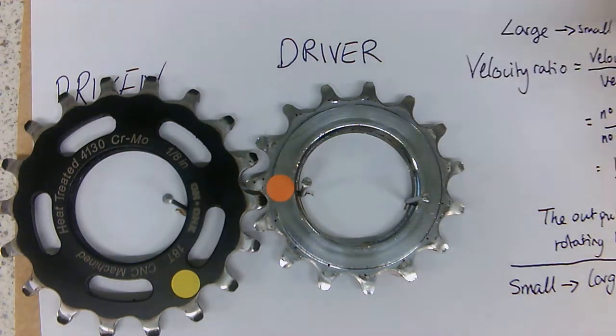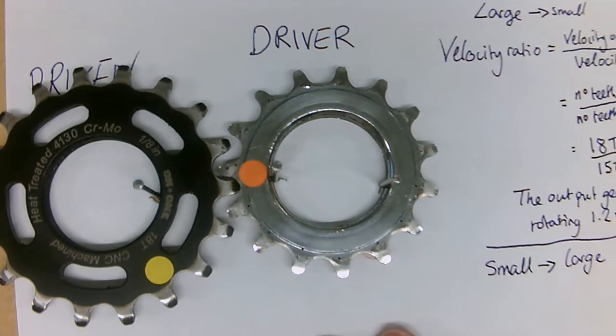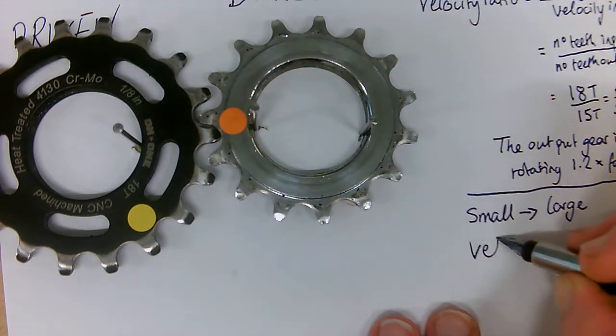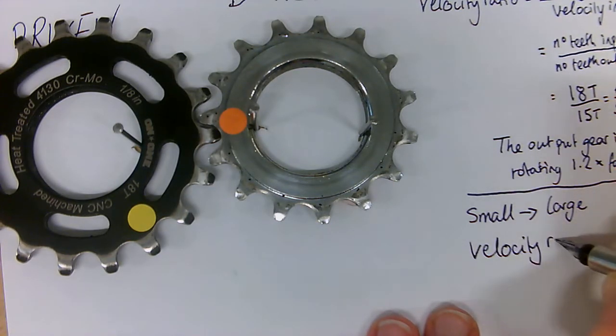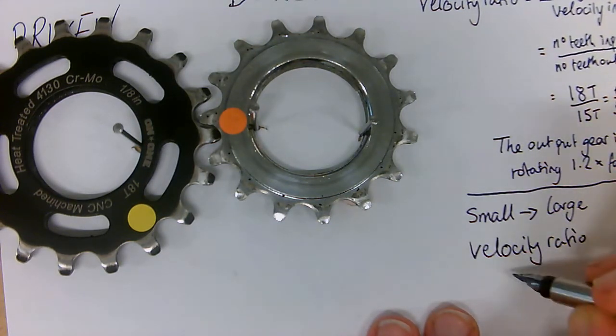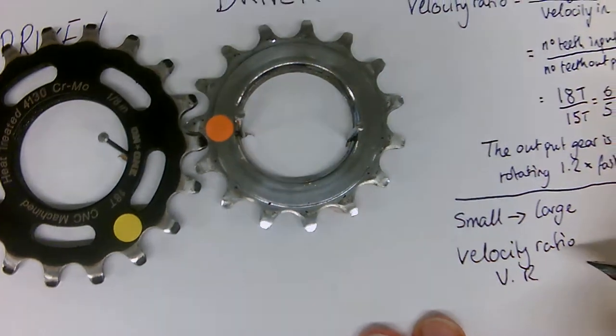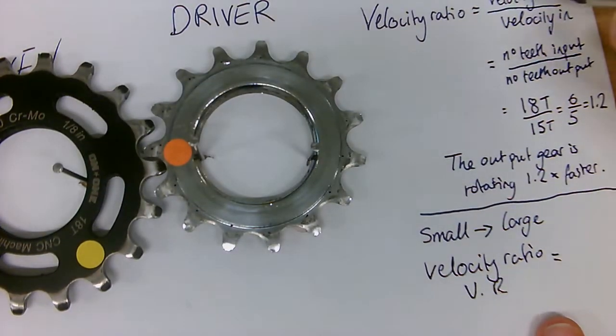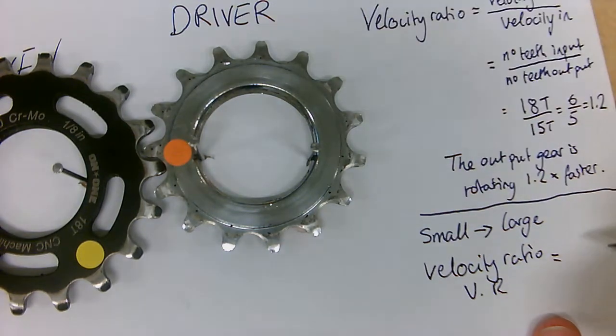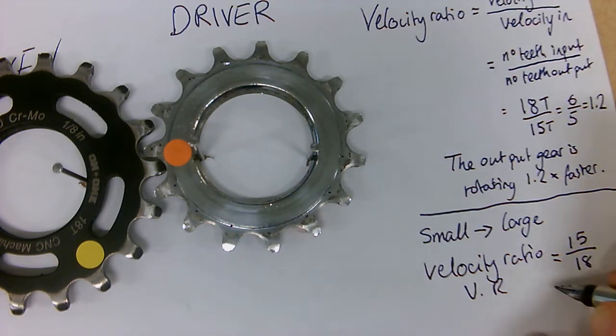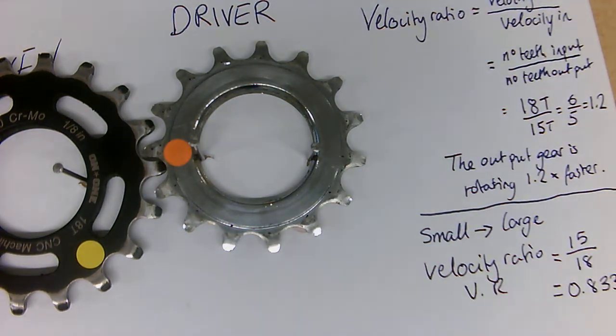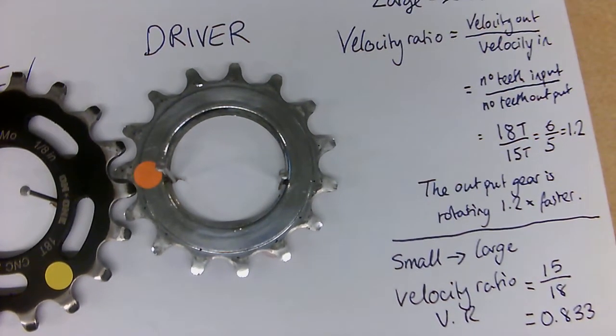Now, what is our velocity ratio going to be here? Our velocity ratio, or the VR, is going to be the number of teeth on our input, which is 15, divided by the number of teeth on our output cog, which is 18, which we find is 0.833. Now, what does this tell us?